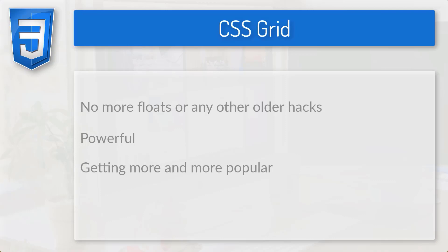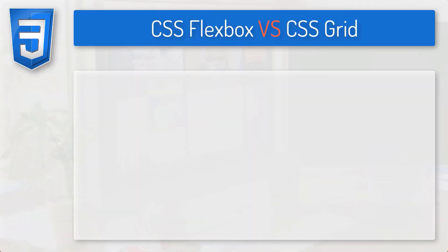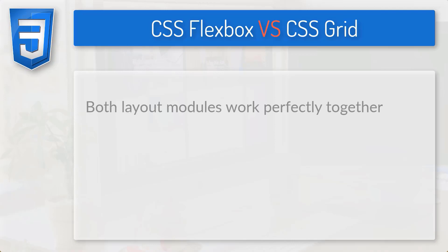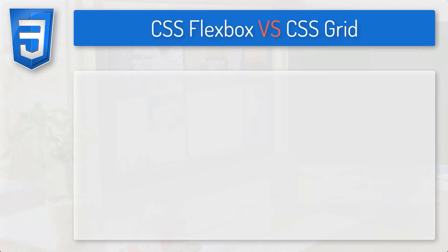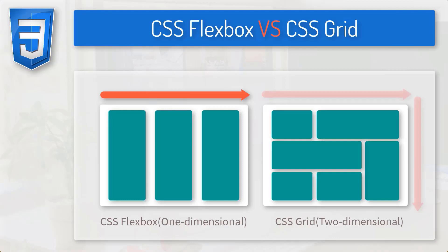Nowadays CSS Grid is getting more and more popular because it gives us more flexibility and control over layout than ever before. We hear questions about which layout module is better, but actually I think both of them are really powerful and we can use both of them. CSS Flexbox and CSS Grid work together perfectly. One of the main differences is that CSS Flexbox is a one-dimensional layout module, whereas CSS Grid is a two-dimensional layout. Flexbox allows us to align items as a row or a column but not both simultaneously. The grid layout gives us the ability to divide the web page into rows and columns simultaneously.